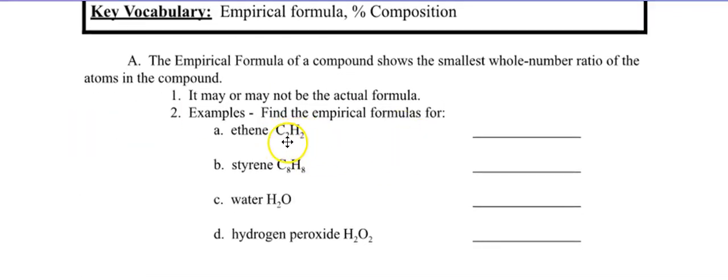Here's ethene: the number of carbon atoms is two and hydrogen is two. What's the smallest whole number ratio of two and two? You can divide both by two — so two divided by two is one, and two divided by two is one. The smallest whole number ratio is C₁H₁, or just CH. What about styrene? Eight atoms of carbon and eight atoms of hydrogen — dividing both by eight gives you C₁H₁ again, so the empirical formula is also CH.